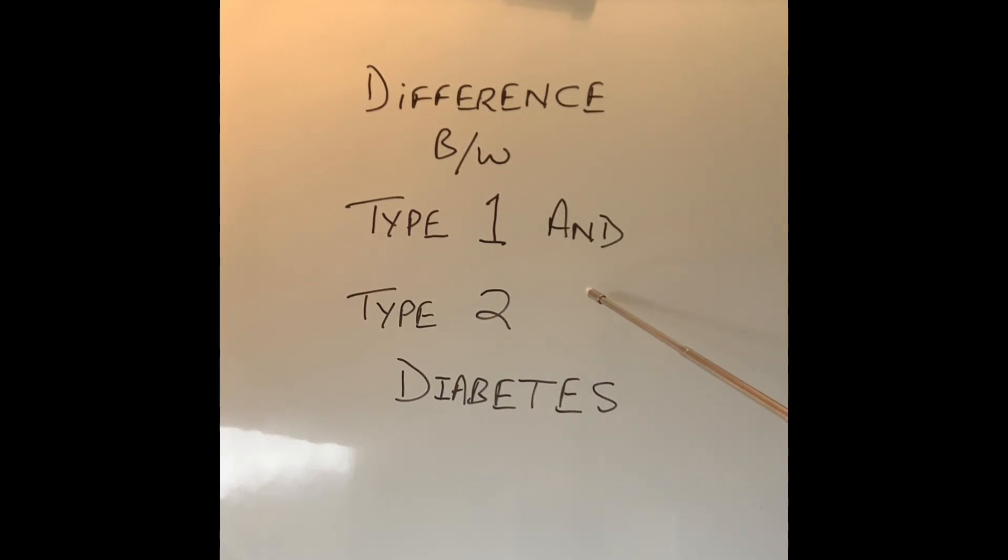I'll try and explain it in very simple language because there is a fair bit of confusion between the two types of diabetes. In my last video we spoke about blood sugar or blood glucose, which means one in the same thing, where it comes from and what actually happens in diabetes.